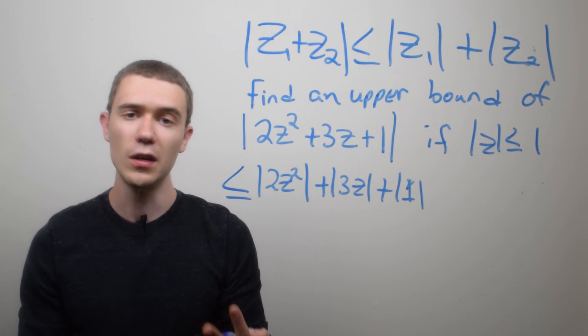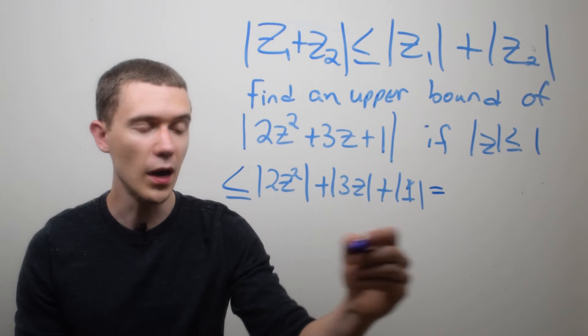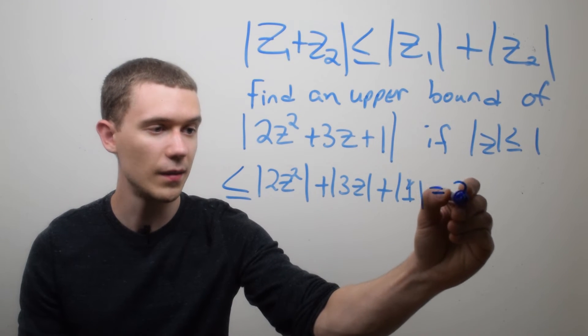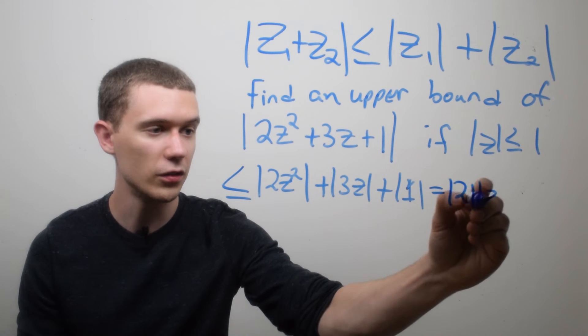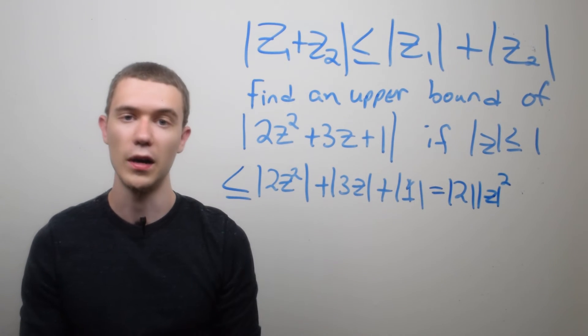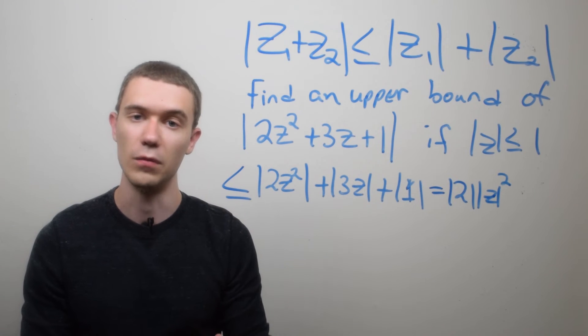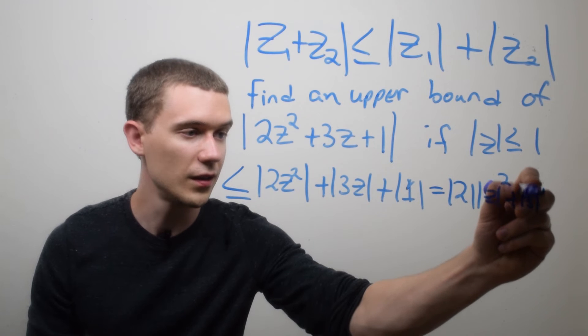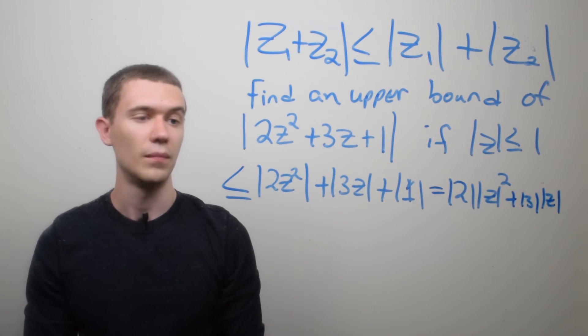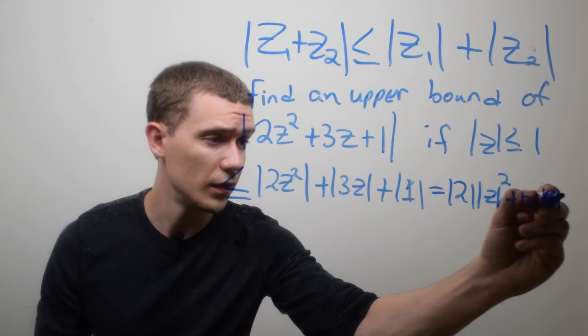And now I'm just going to use properties of the modulus to say that the modulus of 2z squared is the same as the modulus of 2 times the modulus of z all squared, right? The modulus is multiplicative, so I can take exponents out and I can break up multiplications, plus the modulus of 3 times the modulus of z. And the modulus of 1, well, the length of the number 1 is simply 1.